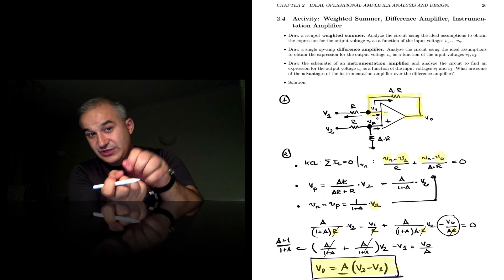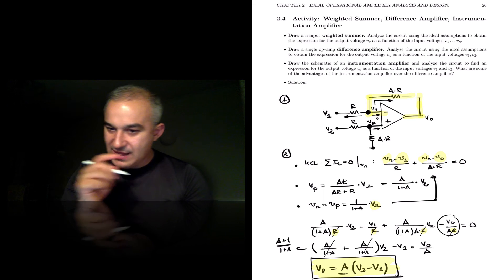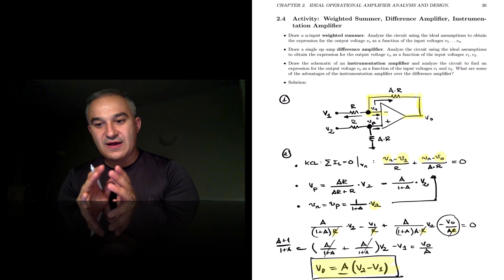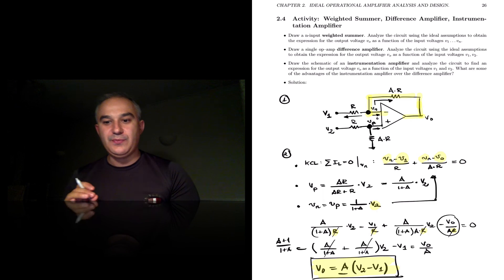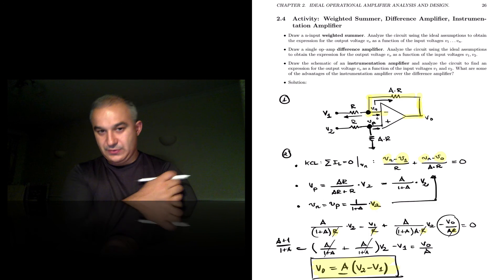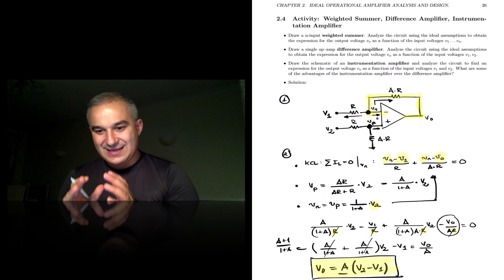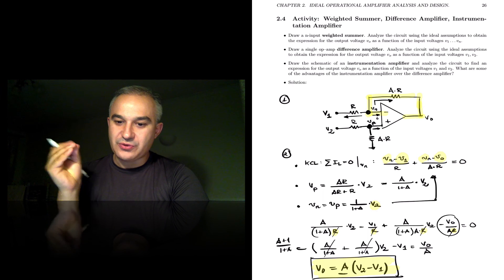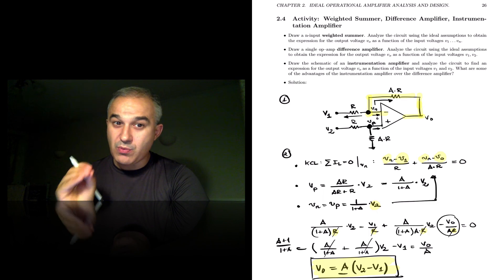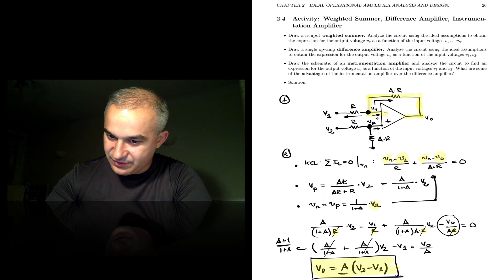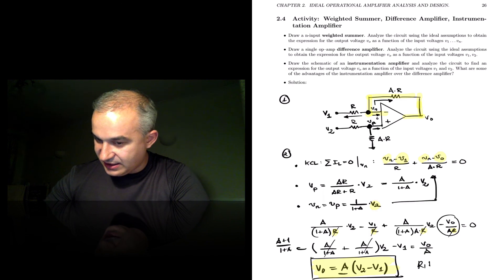A couple of things: the signs of V1 and V2 in the expression depend on what input each signal is applied to — whether you apply it to the positive or the negative terminal. So if you wanted V1 minus V2, you just change the node at which you apply the signal. It's also very important that this circuit requires very good resistance matching to achieve a good common mode rejection ratio. The differential input impedance depends on R — the differential input impedance is 2R.